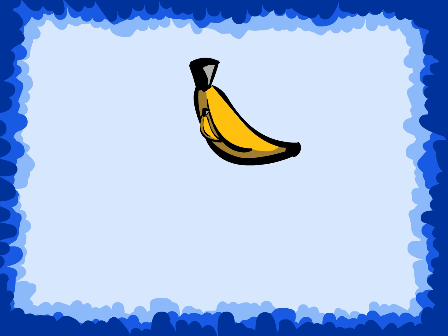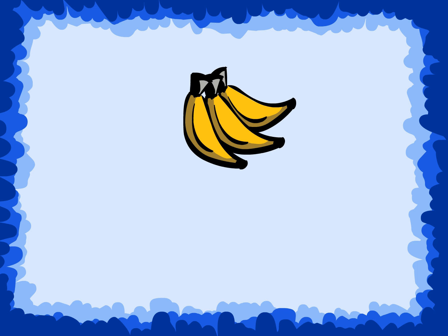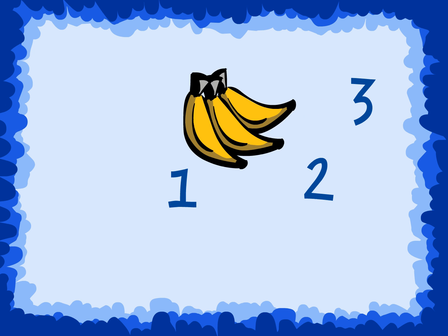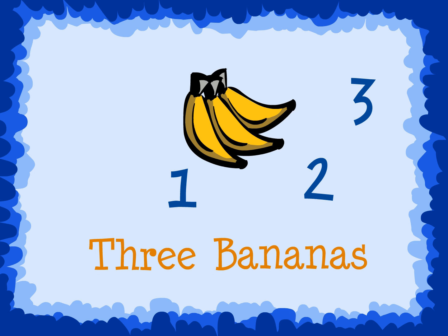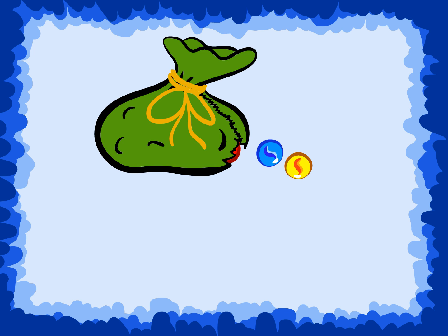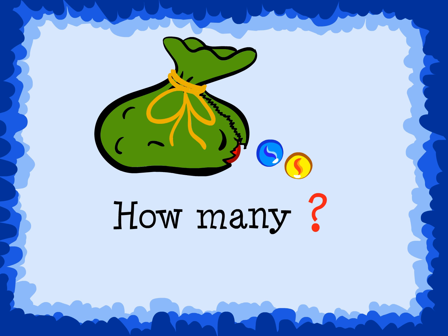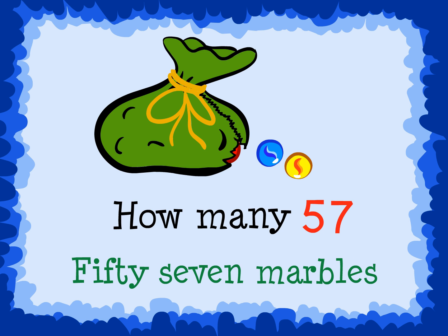Here are some examples of cardinal numbers. Look at this set of bananas. We could count using cardinal numbers: 1, 2, and 3. We have 3 bananas. After counting all the marbles in this bag, we would use cardinal numbers to tell how many were in the bag. There are 57 marbles in this bag.